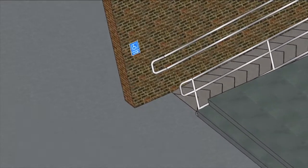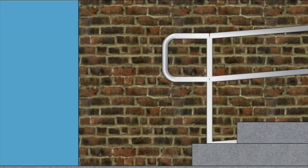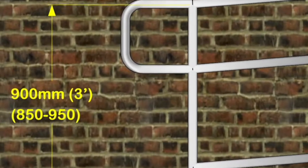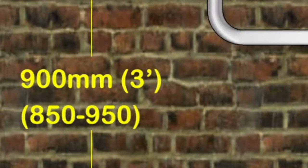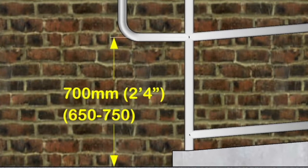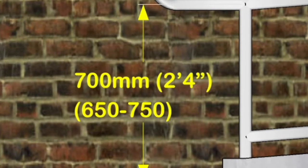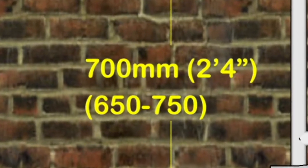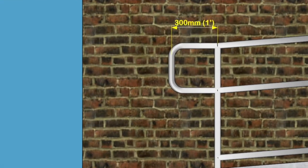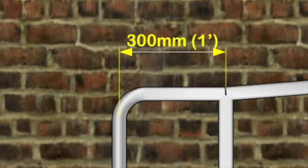Handrail dimensions: handrails should be provided at two heights. The upper rail should be at a nominal height of 900 millimetres, or between 850 and 950 millimetres. The lower handrail should be at a nominal height of 700 millimetres, or between 650 and 750 millimetres. The handrails must extend 300 millimetres beyond either end of the ramp.